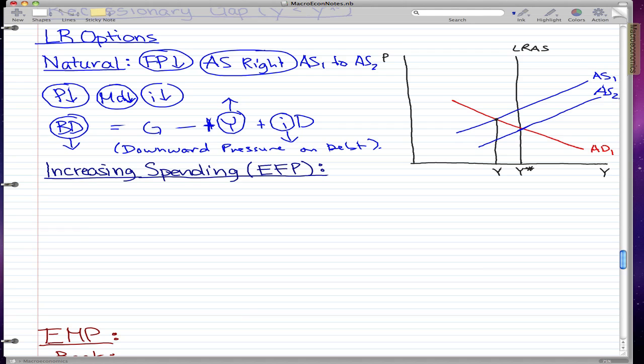Now, we're going to go through increasing spending. And we increase spending by doing the expansionary fiscal policy. We know that in the expansionary fiscal policy, the government spending goes up. One of two things happen. The government spending goes up or the tax rate falls.